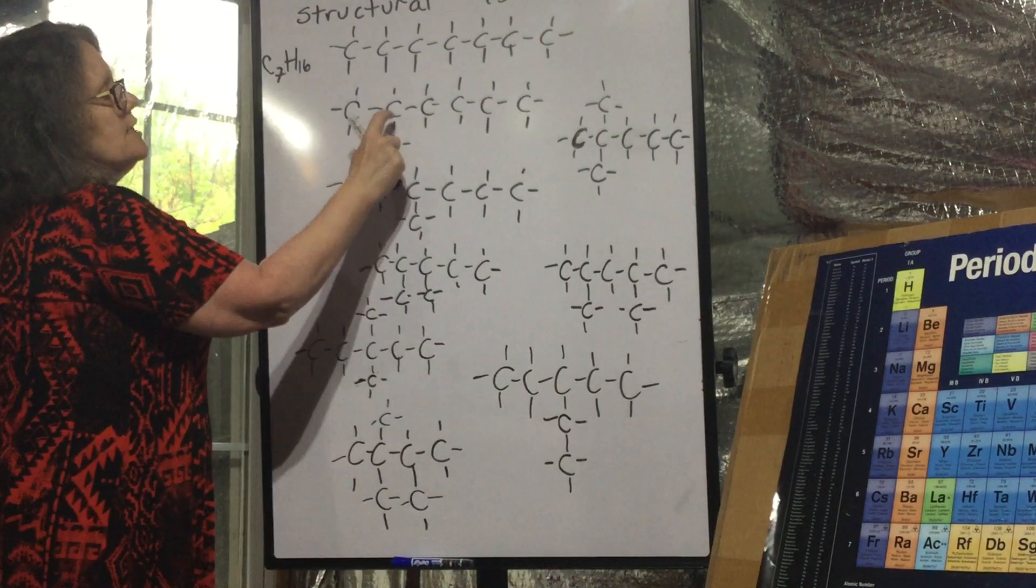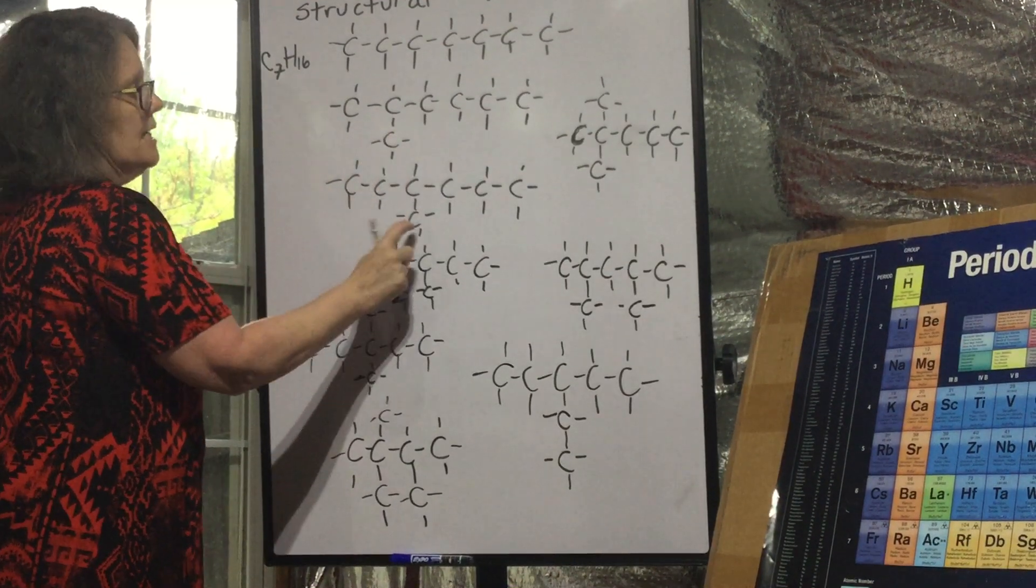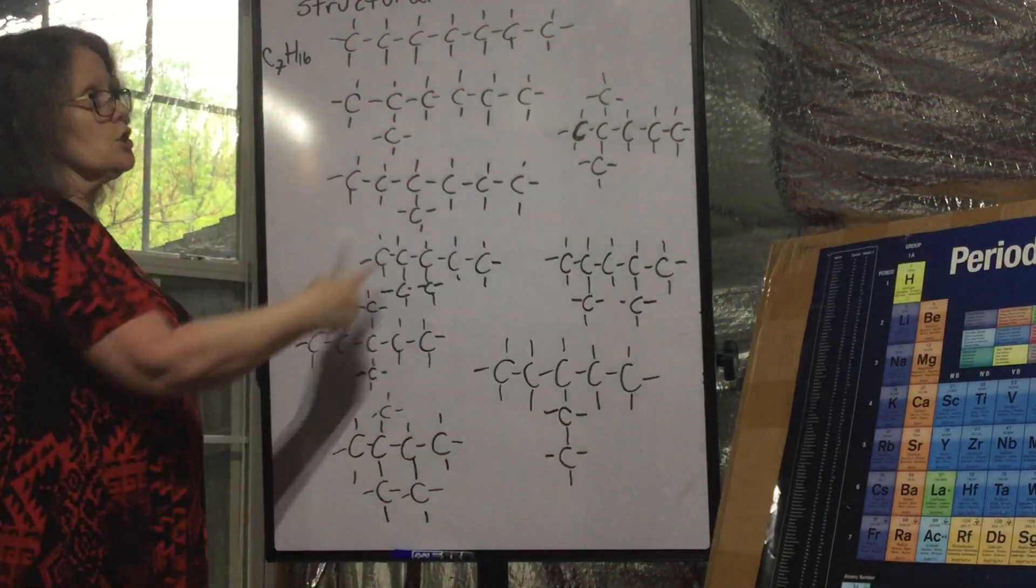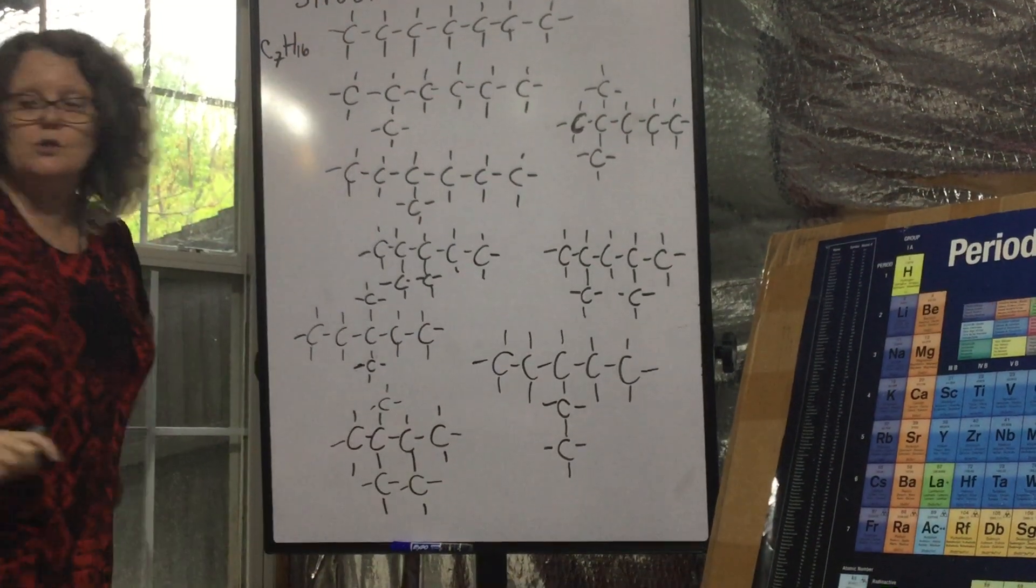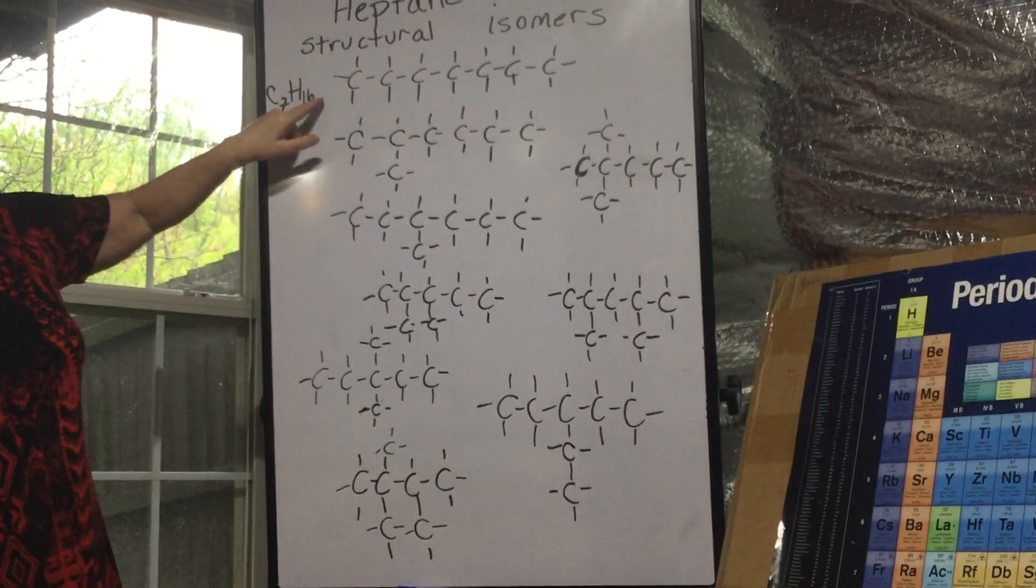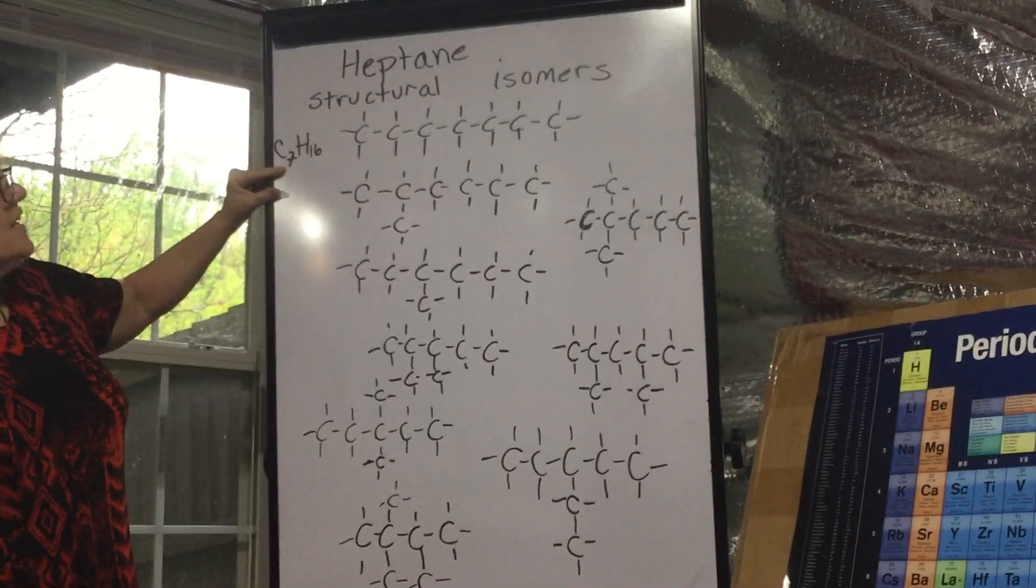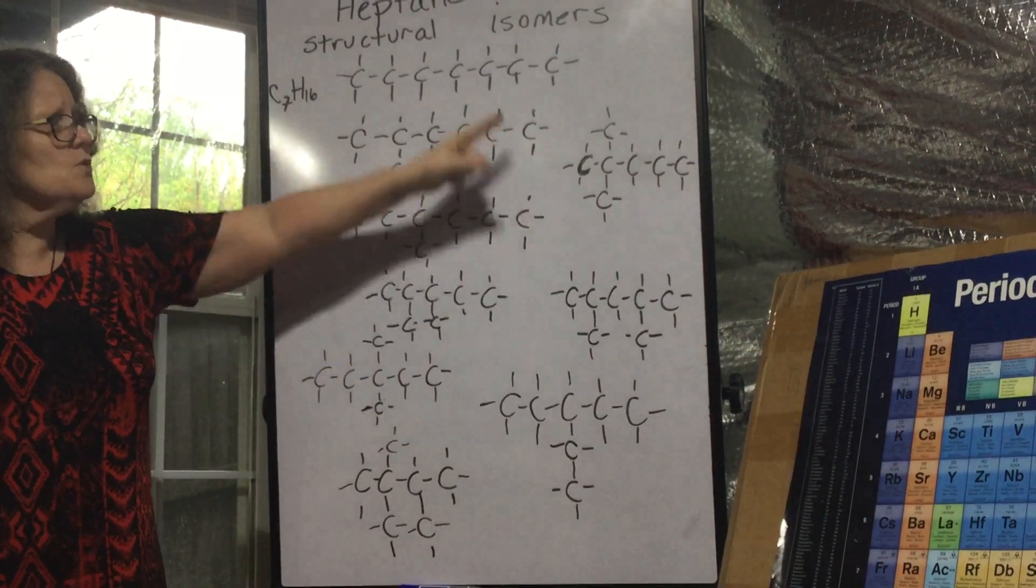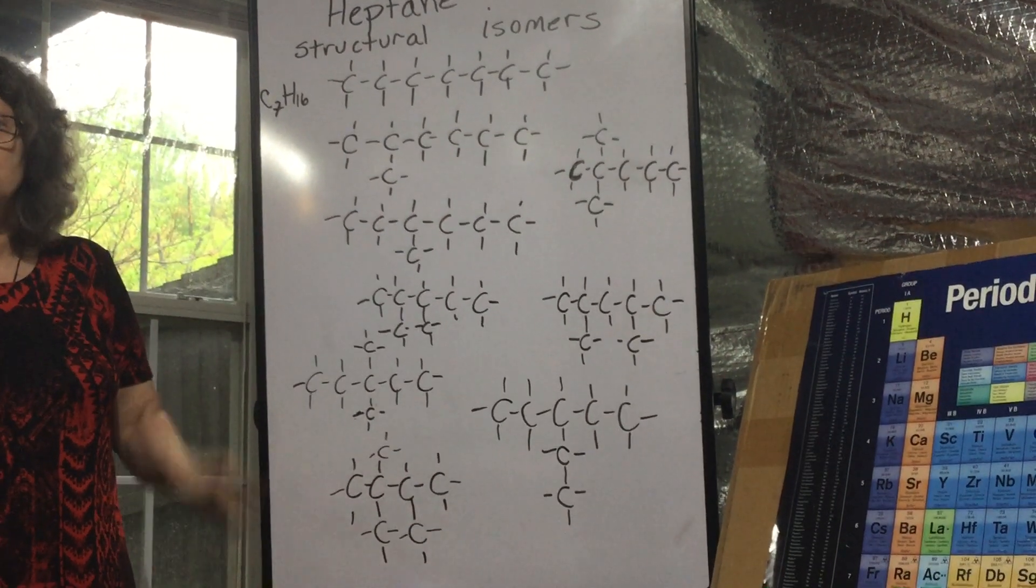We have here 2-methyl hexane and 3-methyl hexane. They'll be similar, they're still going to have slightly different properties. These are all structural isomers. So I want you to try that, start with C7H16, how many different ways can you draw these structural isomers?